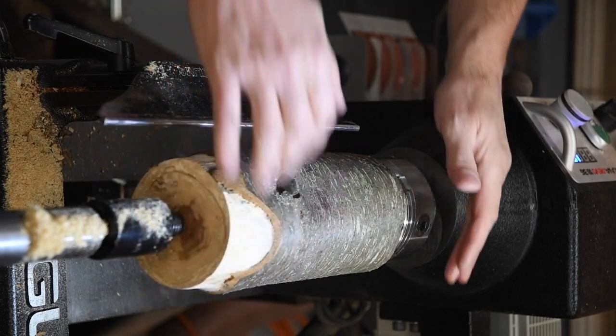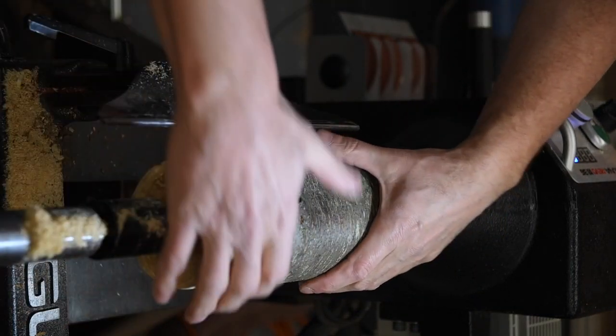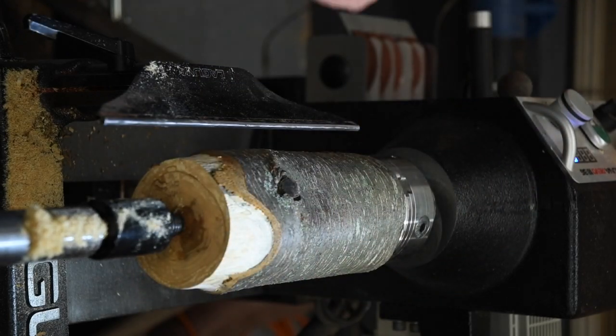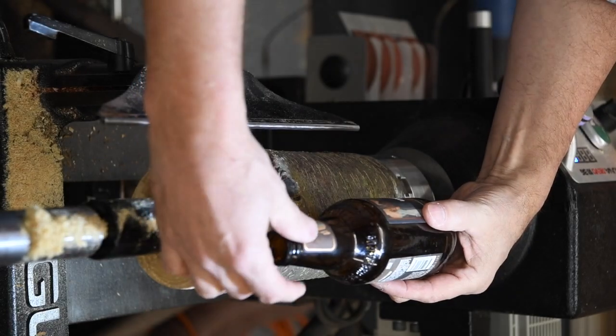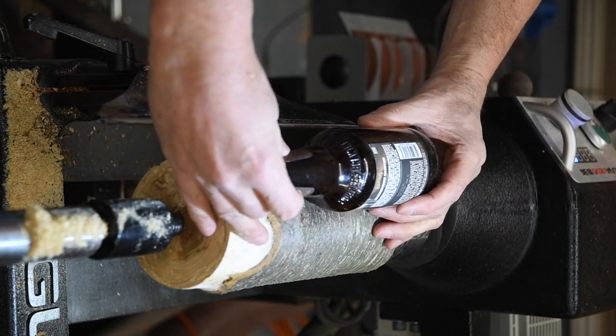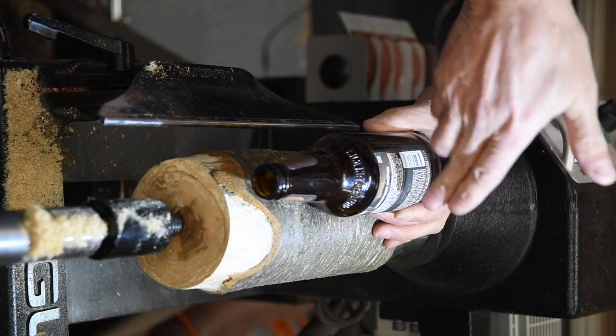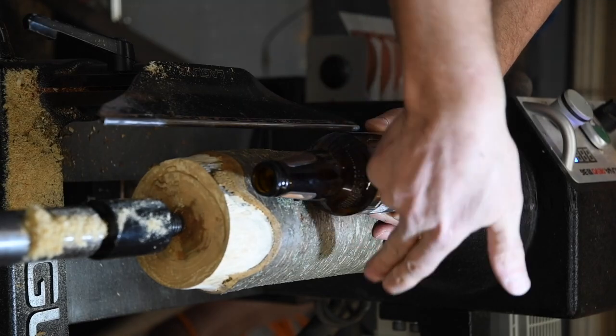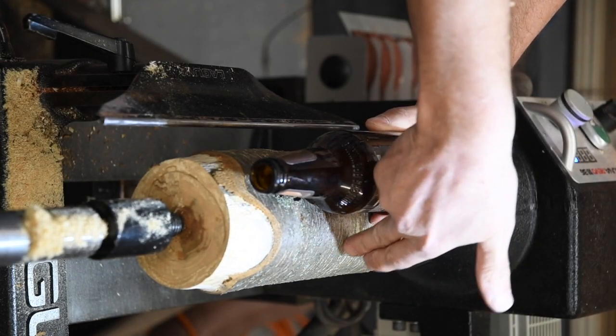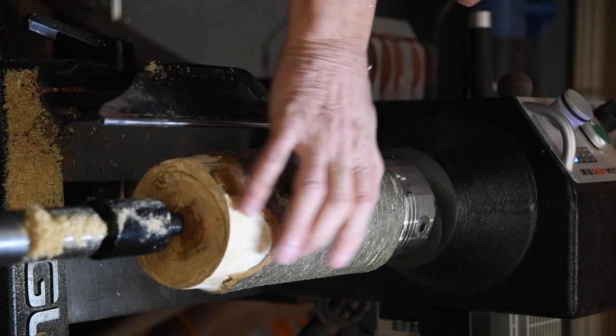All right. We now have it mounted in the chuck and between centers. It's good and solid. I want to take my bottle now and just hold it up, get a rough idea of how much wood I want to remove and where I want to have the bottle emerging from this branch. So I'm just going to estimate a point right about here, and I can always adjust that later.